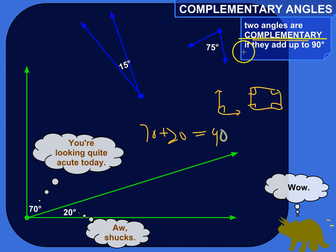Or they might be just free-floating angles out in outer space, not really connected to each other in any way. But if they add their angle measurements together and make 90, then those two angles are considered complementary. So in this case, 15 and 75, if you add them together, would be 90. So these two angles are complementary.